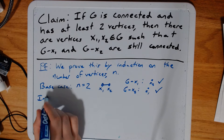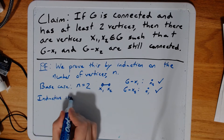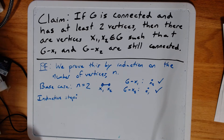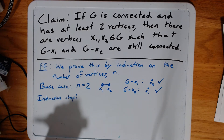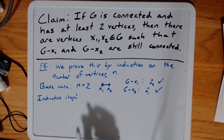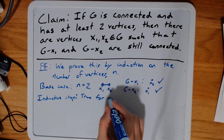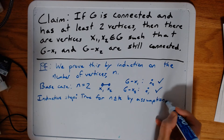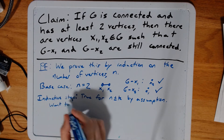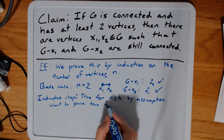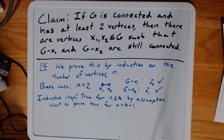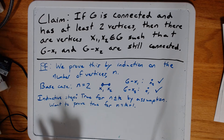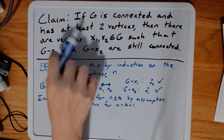Now let's go to the inductive step. Here's where the fact that we're going to use strong induction comes in. We're not going to assume just that this claim is true for N equal to some K — we'll assume it's true for N less than or equal to some K. And then we want to prove it is true for the case where N is K plus 1. So we're not just assuming that the claim holds for a graph that's one vertex smaller; we're claiming that it's true for any smaller graph that meets the conditions.